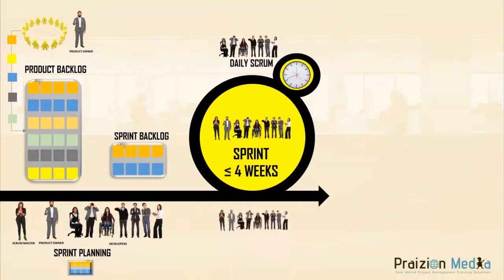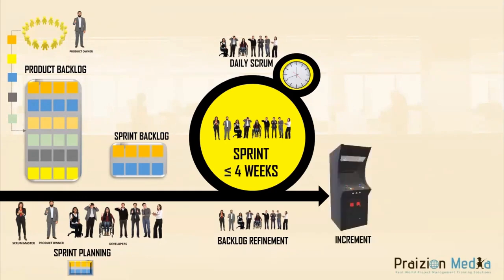The next thing that happens — an optional one — is backlog refinement. This is where the product owner works with the team to get user stories ready for the next sprint in whatever format works for you. The next thing is we get the increment, also known as a potentially shippable increment. This means we could ship it if it's featured enough, but not every increment is featured enough — we may need a number of increments to get a release, and we could have several increments in a single sprint.